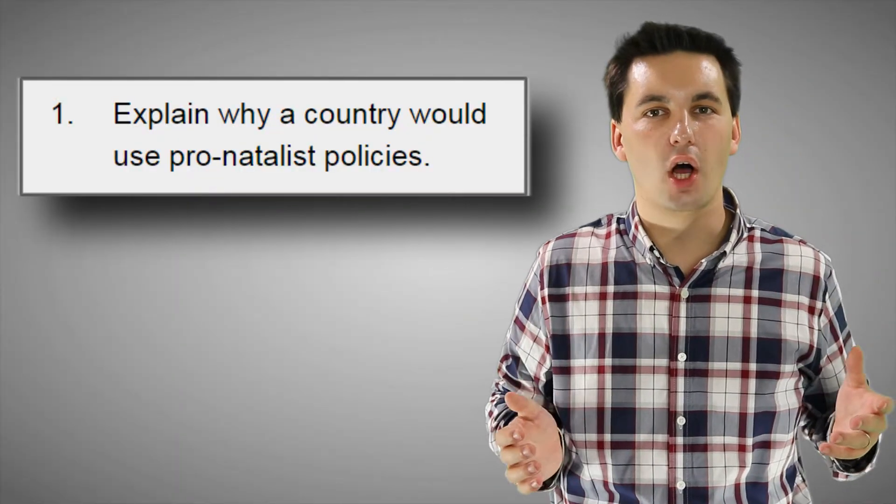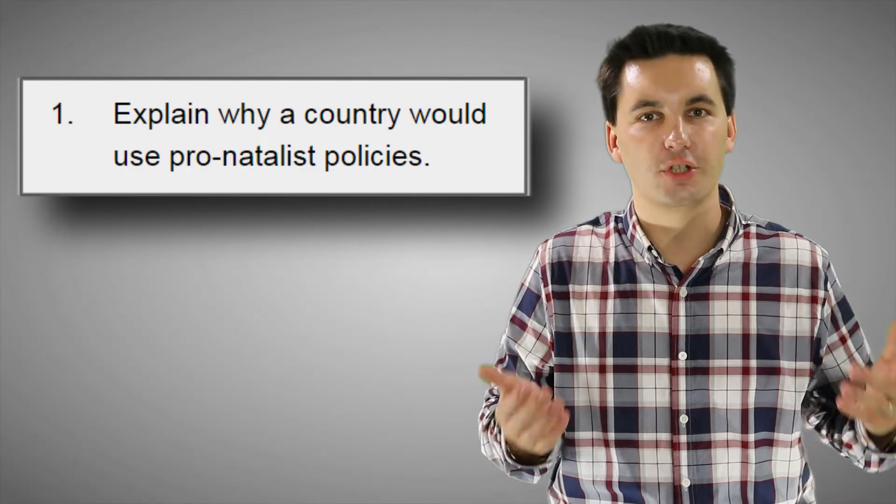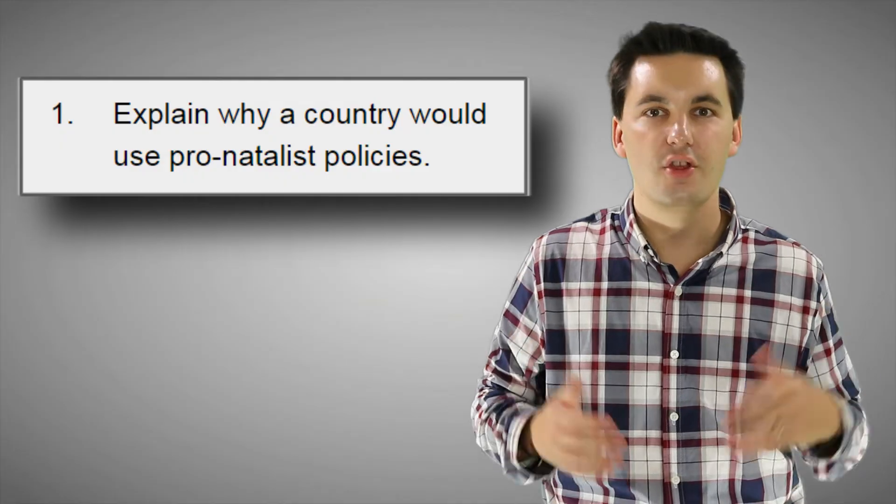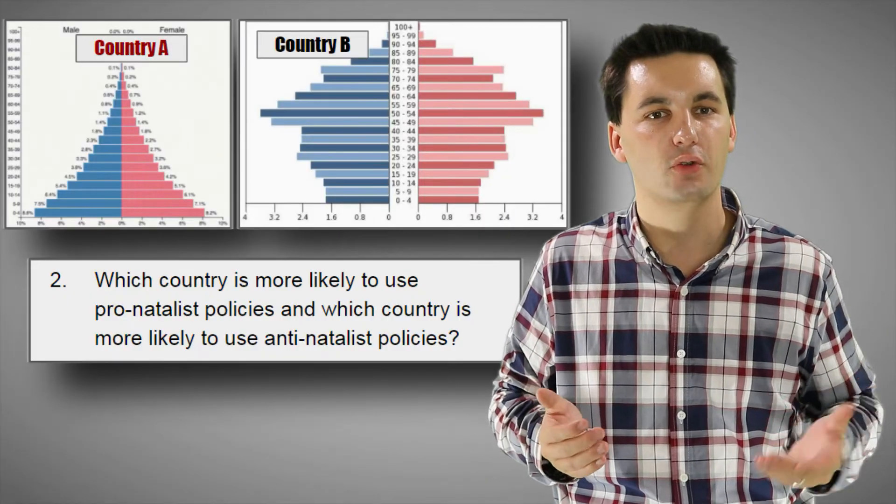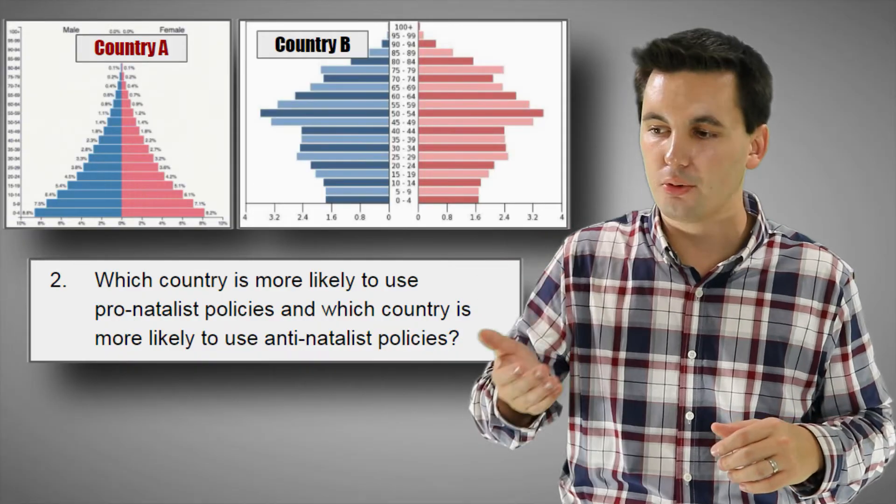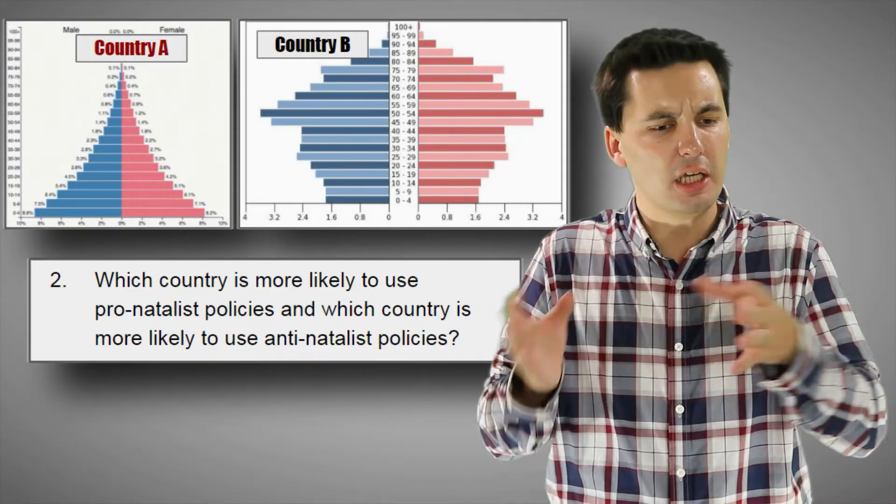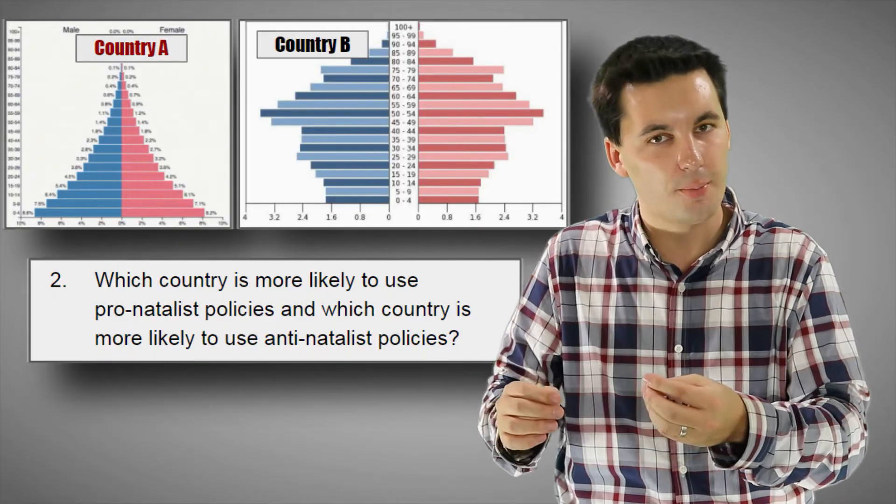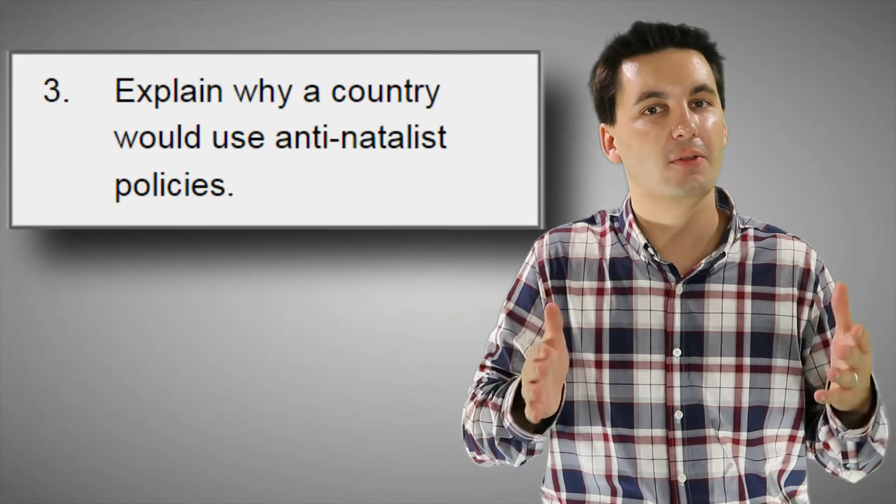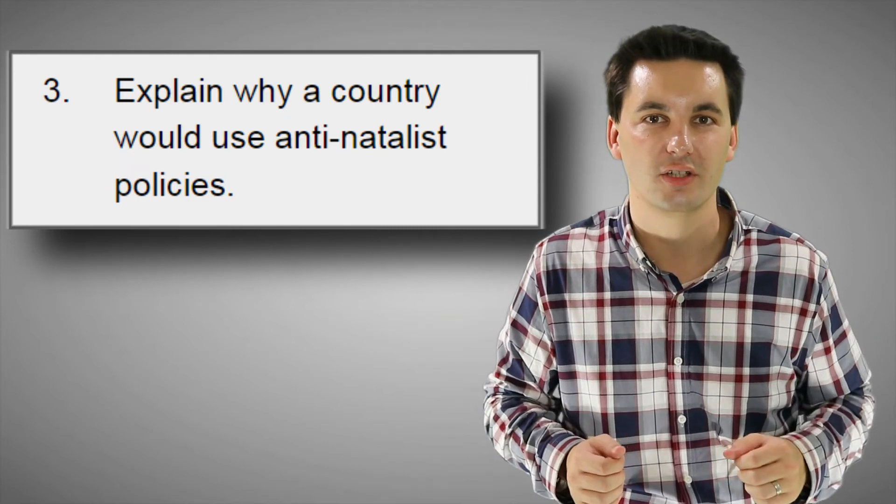Now, whenever the government gets involved or organizations get involved with reproduction, it's going to be controversial. The important thing here, though, is to understand why would a country have to use antinatalist policies or pronatalist policies? How does that connect into that demographic transition model? We can see that as countries develop, that population growth rate is slowing down. And then we see shifts in government policies.